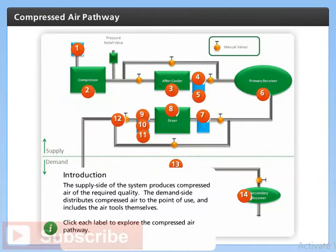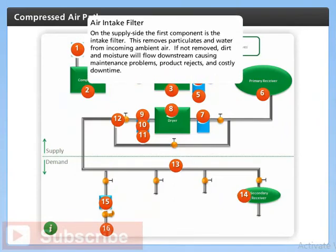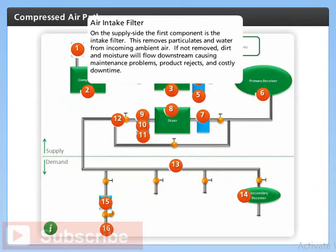The supply side of the system produces compressed air of the required quality. The demand side distributes compressed air to the point of use and includes the air tools themselves. On the supply side, the first component is the intake filter. This removes particulates and water from incoming ambient air. If not removed, dirt and moisture will flow downstream causing maintenance problems, product rejects, and costly downtime.